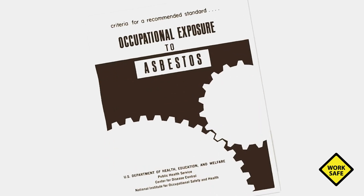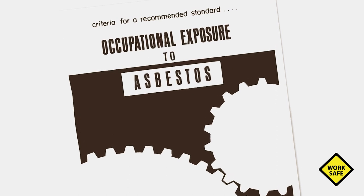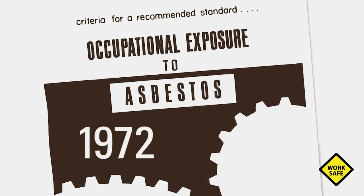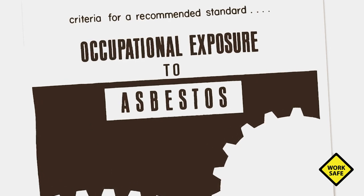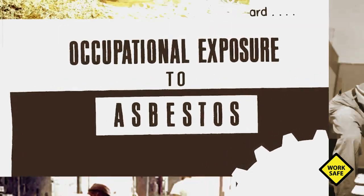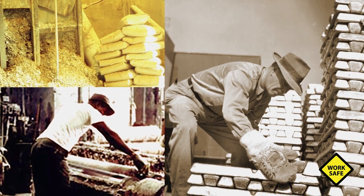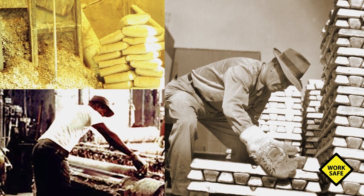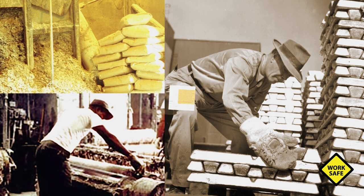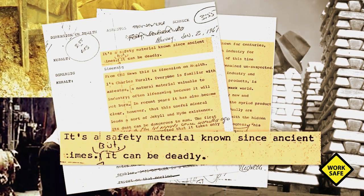NIOSH published the first criteria document. Criteria documents provide the basis for comprehensive occupational safety and health standards. In 1972, NIOSH released Criteria for a Recommended Standard: Occupational Exposure to Asbestos. Asbestos is a natural mineral that requires careful study because it can be useful or harmful — for example, it can be used in fireproofing materials and insulation. However, later studies found that exposure to asbestos dust can cause lung disease or cancer.